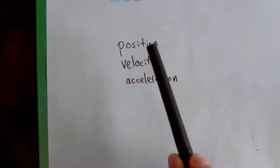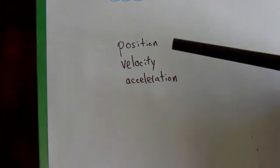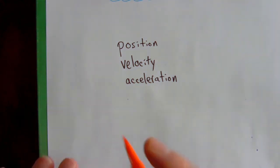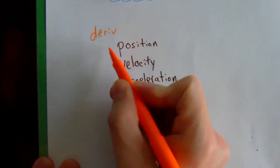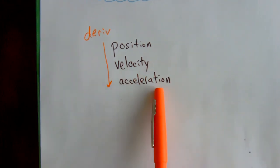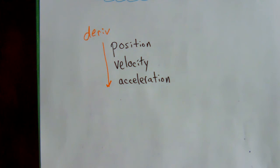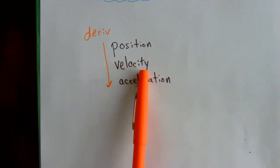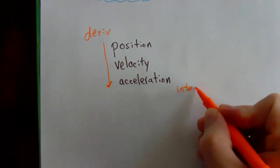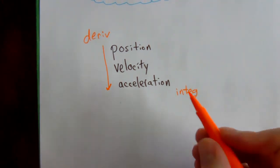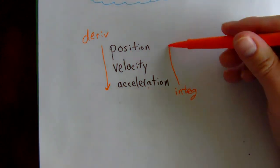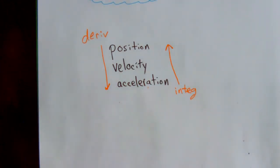Another topic in this section is position, velocity, and acceleration. The order goes: position, velocity, acceleration — and when using derivatives, you go downward. The first derivative of position gives velocity; the second derivative of position gives acceleration. If you already have velocity, take its derivative to get acceleration. In the future with integration — anti-derivatives — you'll go back up that list: integrate acceleration to get velocity, integrate velocity to get position.